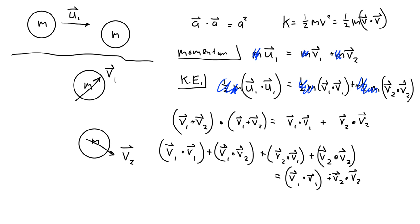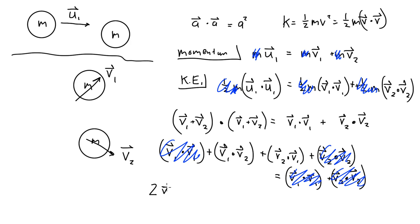Now things start canceling: v1 dot v1 cancels on both sides, and v2 dot v2 cancels on both sides. Because the dot product is commutative, v1 dot v2 and v2 dot v1 are the same thing, so we're left with 2(v1 dot v2) equals zero, which means v1 dot v2 equals zero.